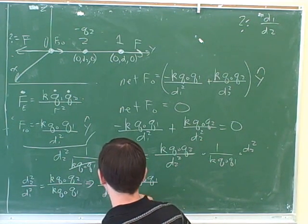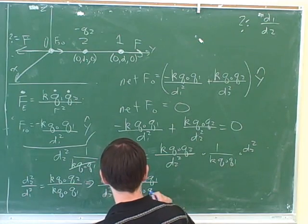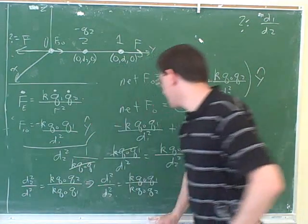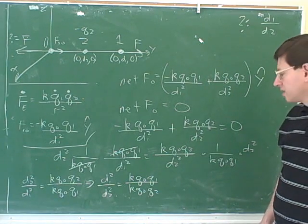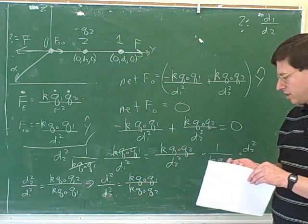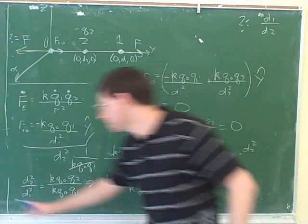Before we do that, can you see any way to simplify this right-hand side? The k's and the q zeros. And what would that leave us with? q1 over q2. We might as well do that now to simplify our work.